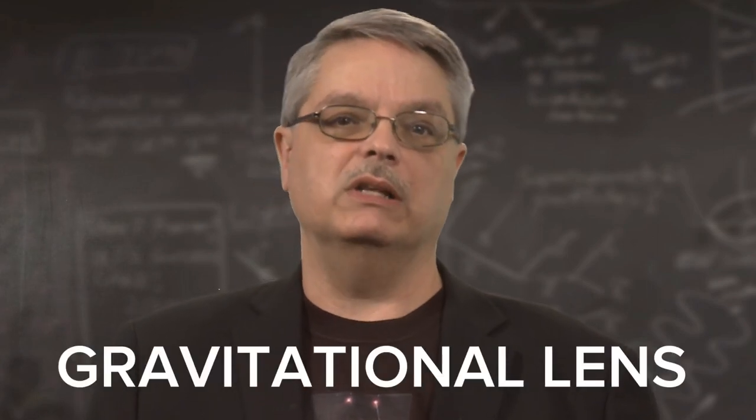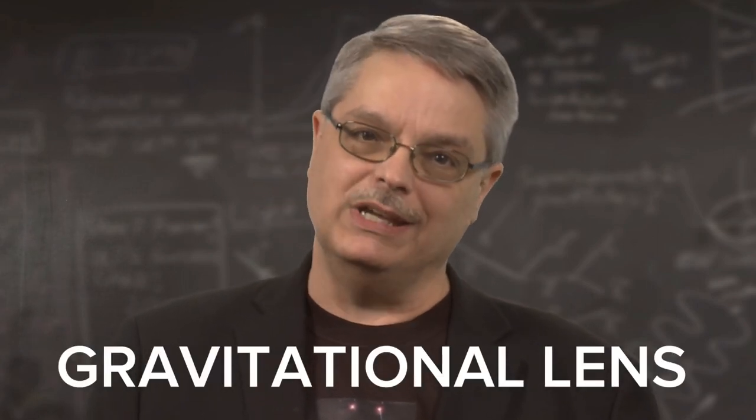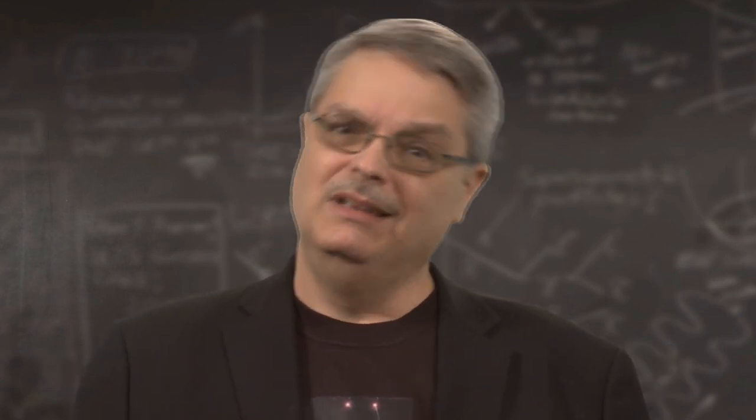Today, we're going to talk about a different kind of lens. This lens is called a gravitational lens and it is caused by a large mass actually distorting and bending space. That's a pretty cool idea, so let's see how that works.